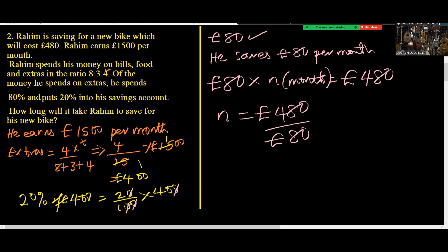Zero cancels zero, and 48 over 8 is 6. So it's going to take him 6 months.